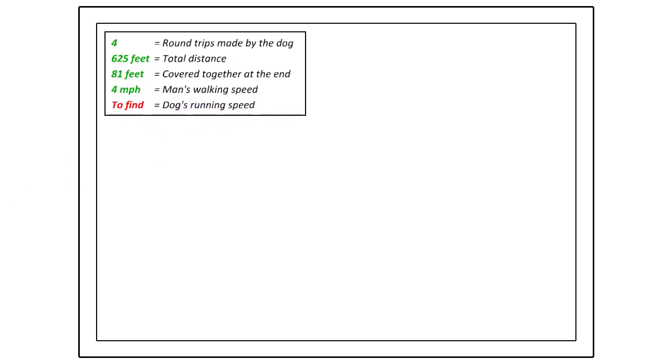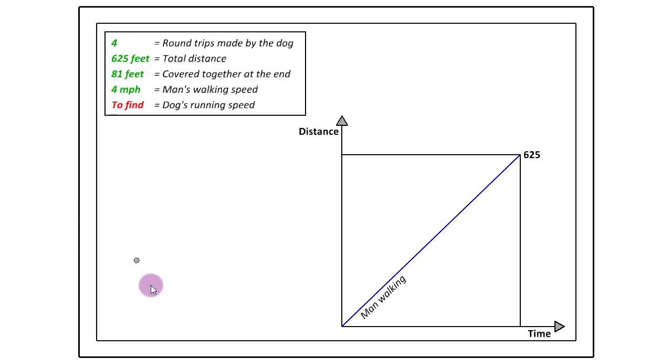We'll start by first erecting a coordinate frame that is distance against time, and here we are going to show the total distance that is 625. And on it now we can show the man's trail. The man would be going from position 0 at time 0 to this distance 625 feet at some time.